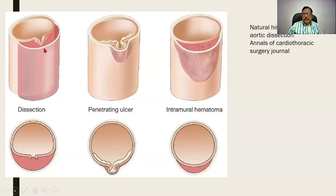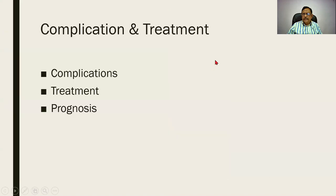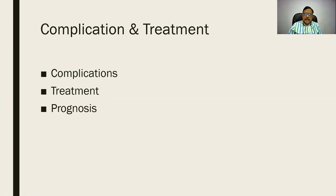A series of pictures shows the dissecting aneurysm. Complications include: if a powerful force like hypertension is present, blood can rupture to the outside and the patient can die immediately. If the patient is luckier, it can rupture back into the lumen. Treatment requires replacement of the region of aneurysm with a synthetic graft — otherwise the patient will die within a few months, and even with surgery the prognosis is restricted to one or two years.